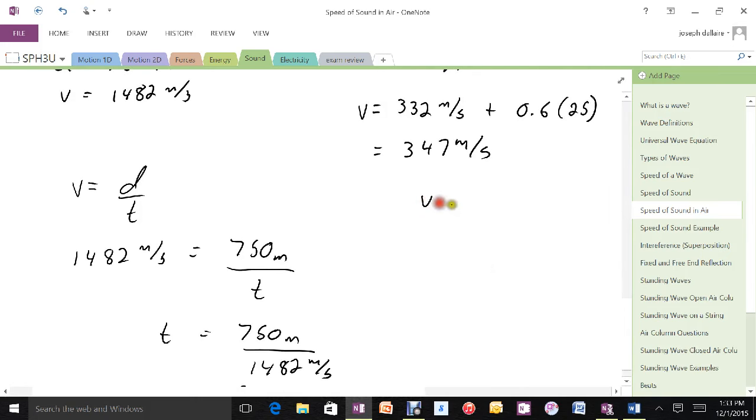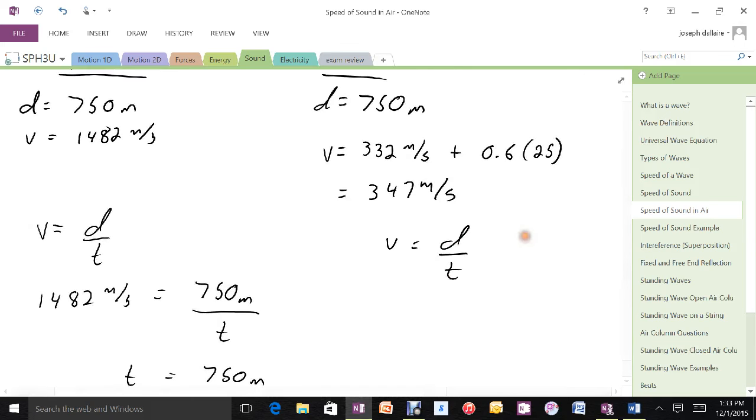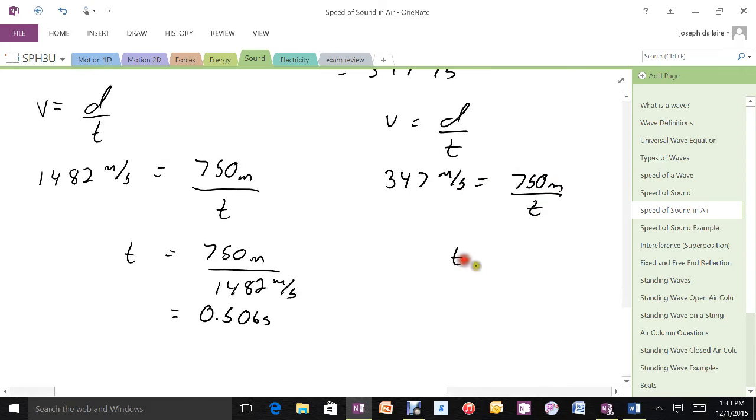Alternatively, for the sound wave that goes through the air, it's going to take the wave about 2.2 seconds to get there. 2.16 seconds to get there.